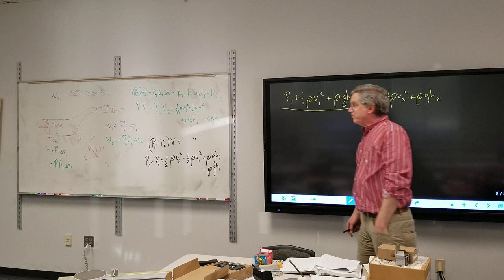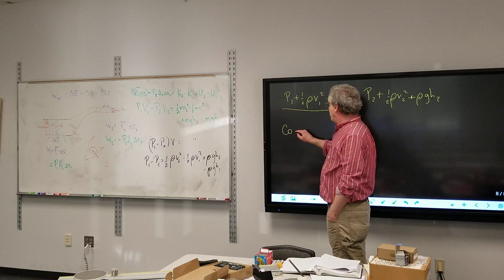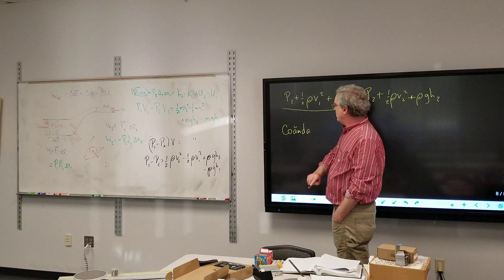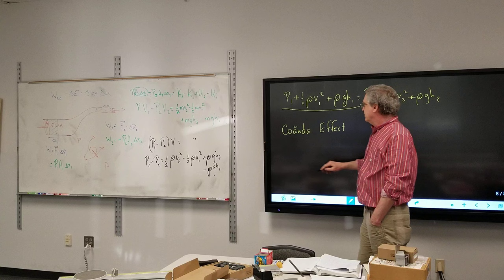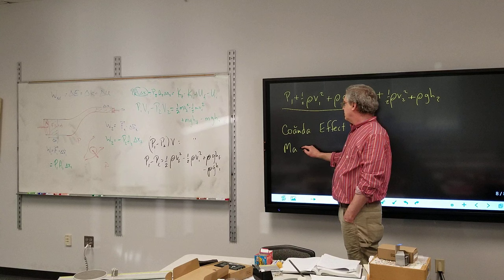Curveball also is another example. Let's write them up. Coandă, I think the accent is there on the A, Effect. For baseball curveballs, that is the Magnus Effect. Those letters might be backwards.